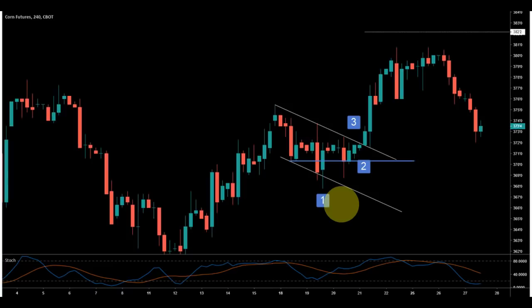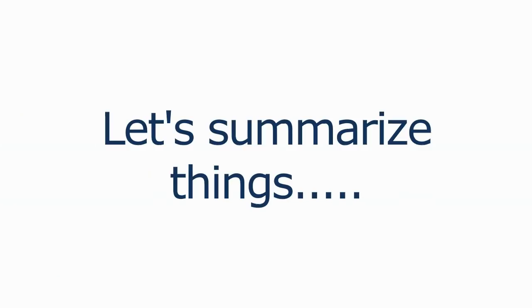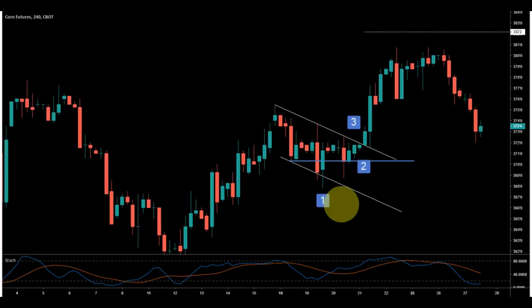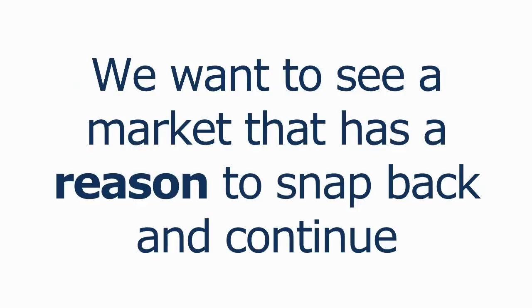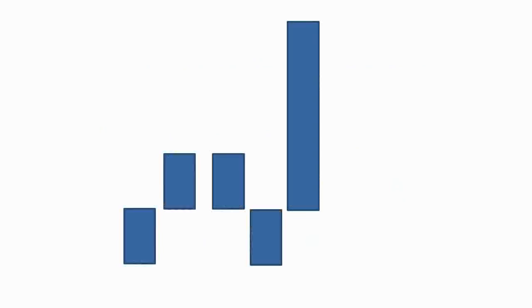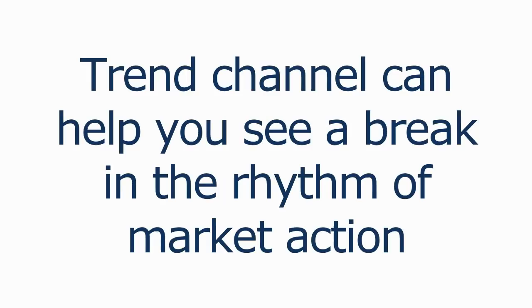By watching what price does in these areas, you can find that buyers were running out of steam. The stop loss is generally around the low of the pullback with a buffer zone to avoid being washed out of the trade. To summarize: the anti-pattern can lead to a trend reversal, but the expectation should be conservative. We want to see a market that has a reason to snap back and continue. Watching for strong moves in price that we haven't seen before is a pretty simple approach.